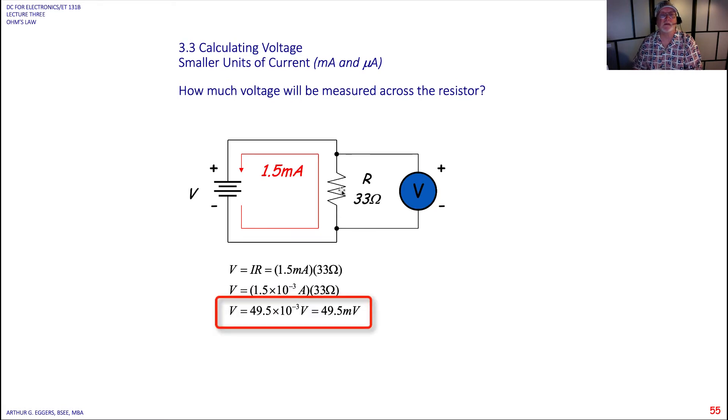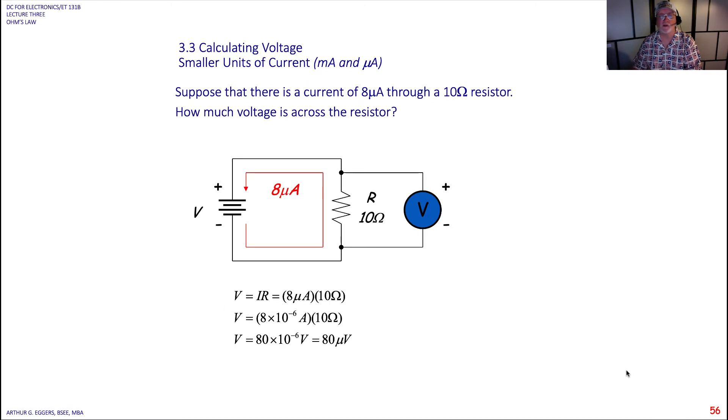A 33 ohm resistor, 1.5 milliamps. Okay, 1.5 milliamps. Again, we only have the one exponential in the current relationship so that we end up with a value of 49.5 millivolts of source voltage.